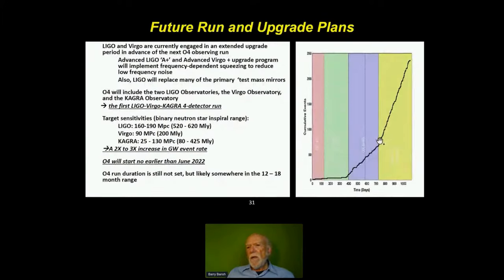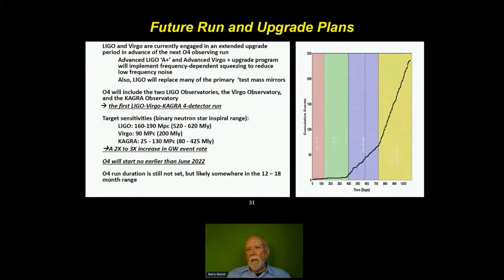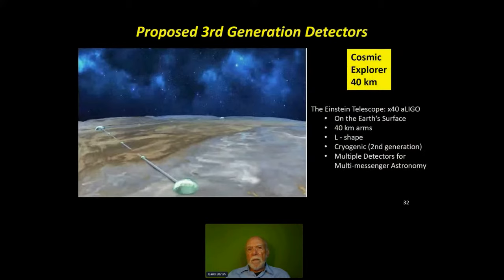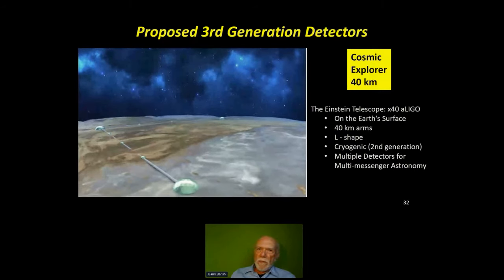The last part of the panel shows the expected rate for the next run, which should start next summer — we lost almost a year because of the pandemic. That will be an event of some sort every couple of days. Only three or four years ago we saw the first gravitational event, and we'll be up to almost an event a day by next year. We'll keep improving the rate of these detectors through this coming decade, but then we'll be limited by what we can do with the present interferometer.